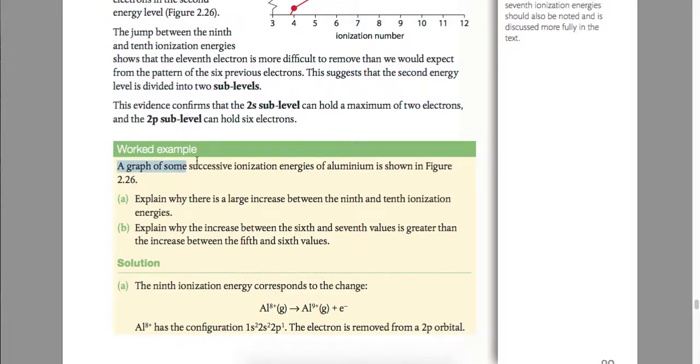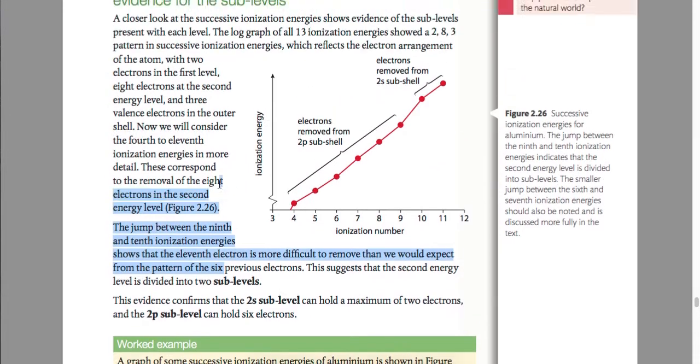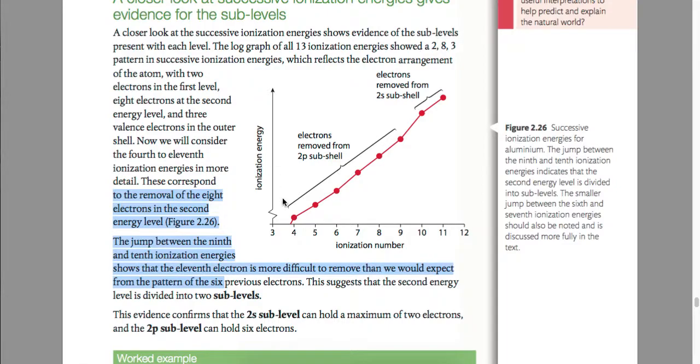So we're basically given a graph of the ionization energies of aluminum. So on the x-axis, we have the ionization number, so this is the number of the electron being removed, and the ionization energy, which is just from small to large, is given on the y-axis.